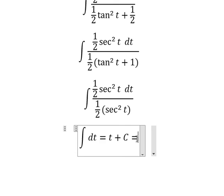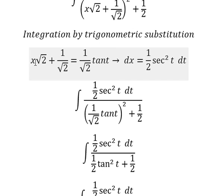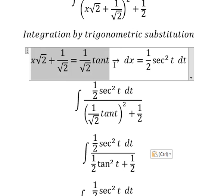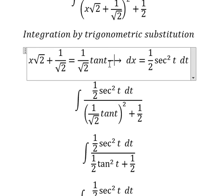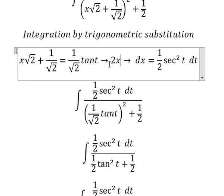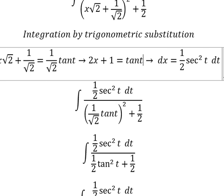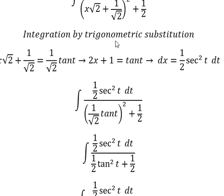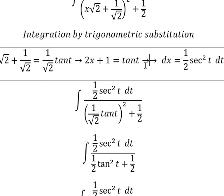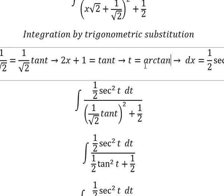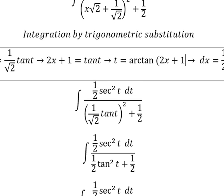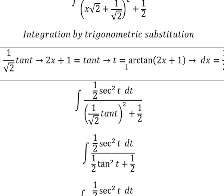Now for t: we put the square root of two to the left, and we have 2s plus one equals tan(t). Therefore t equals arctan(2s plus 1). I will put this one in to substitute for t to get our final answer.